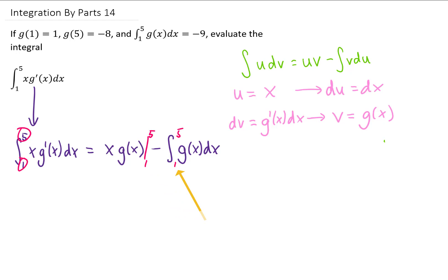And now look what happened there. This last integral that we're left with was given to us in the original problem. So we know that this value here is negative 9. Let's see what happens when we plug in our upper and lower limits of integration on this first piece. Well, as it turns out, g of 5 here was given to us in the original problem, and g of 1 was given to us as well.